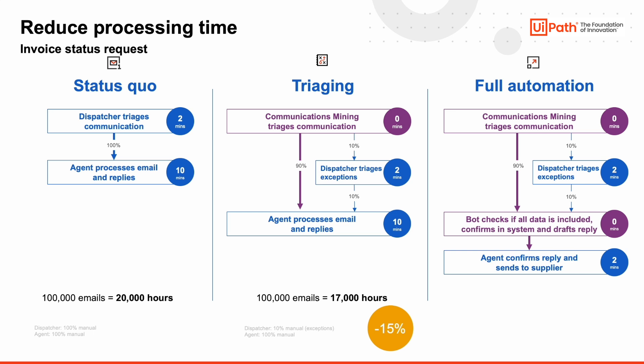With the UiPath platform, the possibilities are endless. You can check if all the invoices are included as attachments, cross-check if the invoice exists in the system, confirm what the payment status is, and finally draft a response using a template or even generative AI. Depending on your preference and sensitivity, you may still have a human in the loop. Automate the repetitive transactional work, and add the personal touch where it counts.